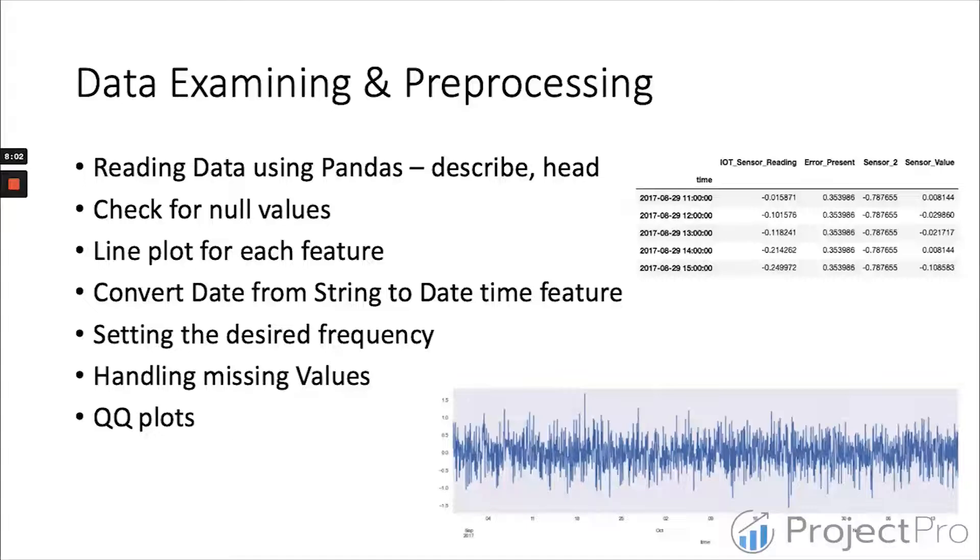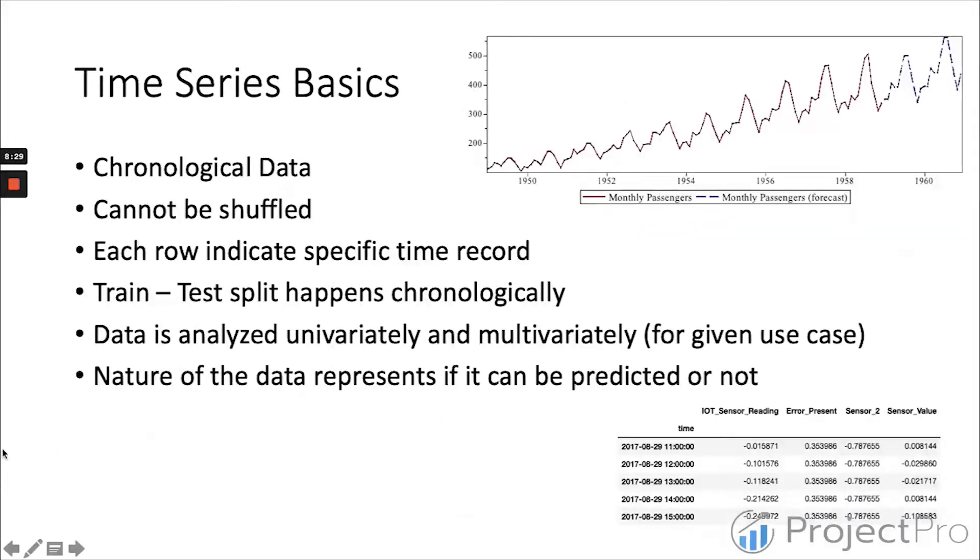Setting the desired frequency - the time period through which the data is being recorded is basically the frequency. Then handling the missing values - obviously if we have a missing value we need to handle it, and then ending it by QQ plots which basically checks the normality of the data and backs up what nature of the data is there.